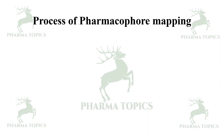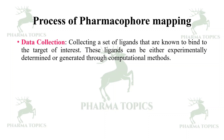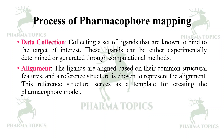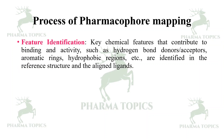The process of pharmacophore mapping begins with data collection: collecting a set of ligands known to bind to the target of interest, which can be experimentally determined or generated through computational methods. Next is alignment: the ligands are aligned based on their common structural features, and a reference structure is chosen to represent the alignment. This reference structure serves as a template for creating the pharmacophore model.